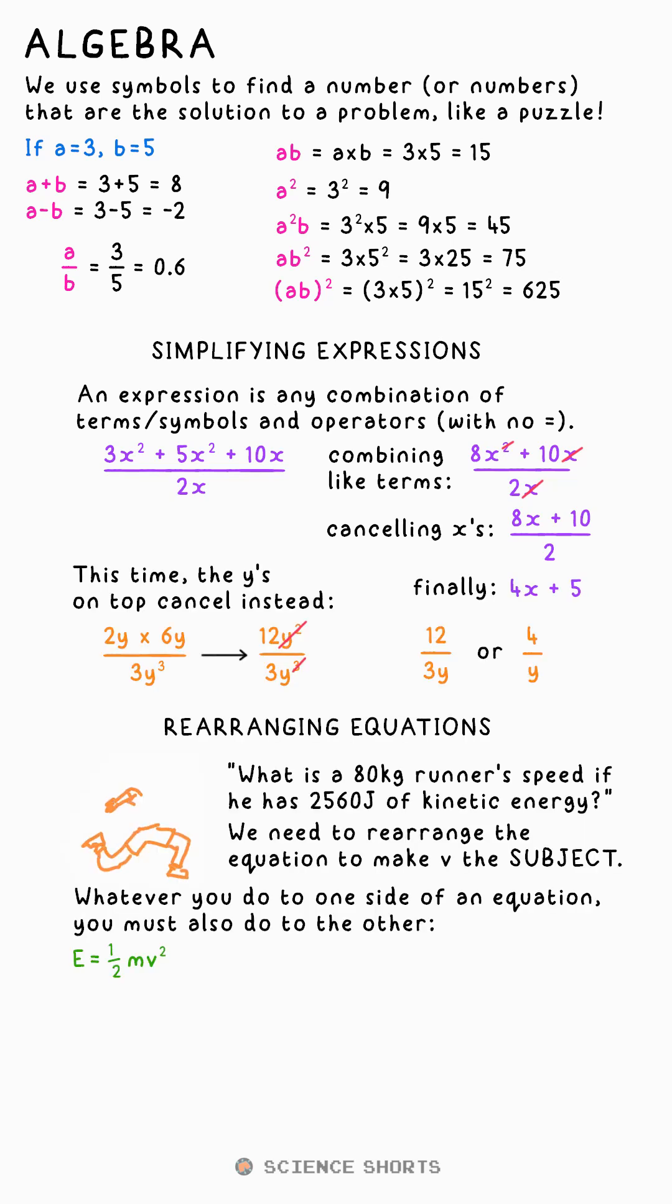What if we know a runner's energy E and mass M and we want to calculate how fast he's running? Let's rearrange it to make V the subject, to leave it by itself.